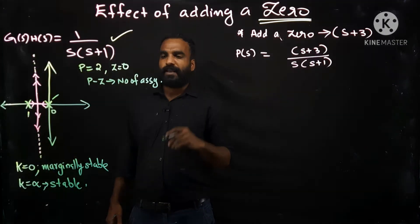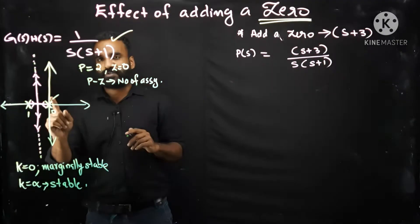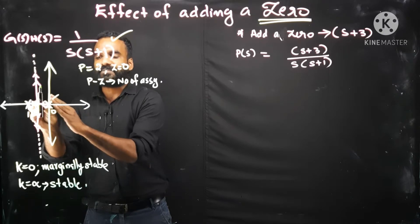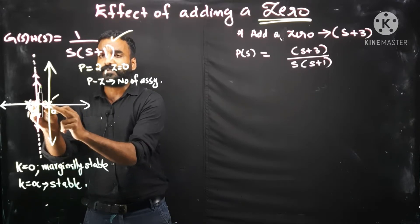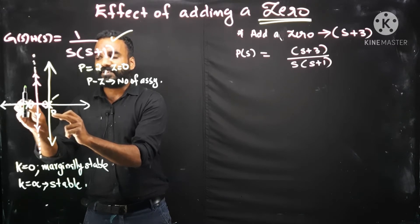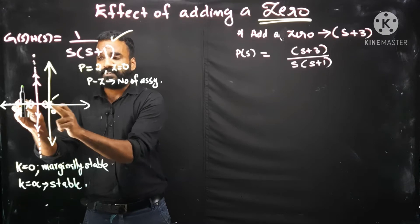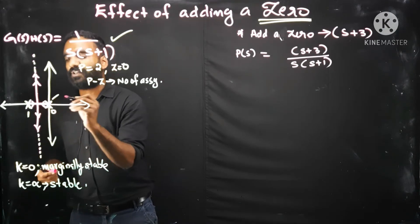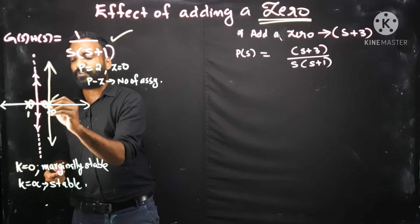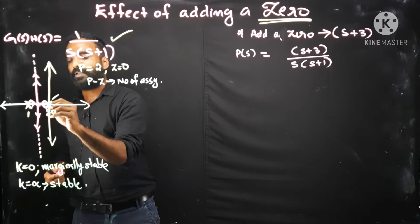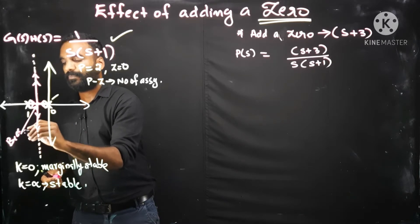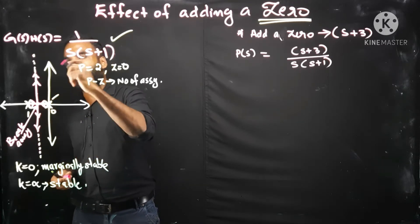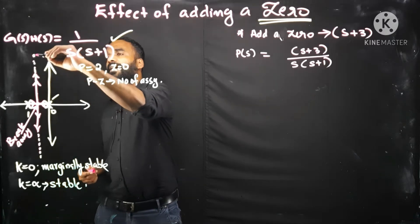After that we check which portions of the real axis have root locus present. Between zero and minus one, root locus is present because towards the right side the number of poles plus zeros is an odd number. But after the pole at -1, towards the right the number of zeros and poles is even, so root locus is not present there. Two branches start from each pole, meet at the breakaway point, then break apart and travel to infinity in the direction of the asymptotes.